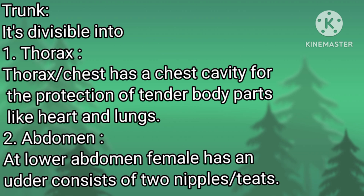Trunk: it is divisible into thorax and abdomen. Thorax: it has a chest cavity for the protection of tender body parts like heart and lungs. Abdomen: at the lower abdomen, the female has an udder consisting of two teats or nipples.